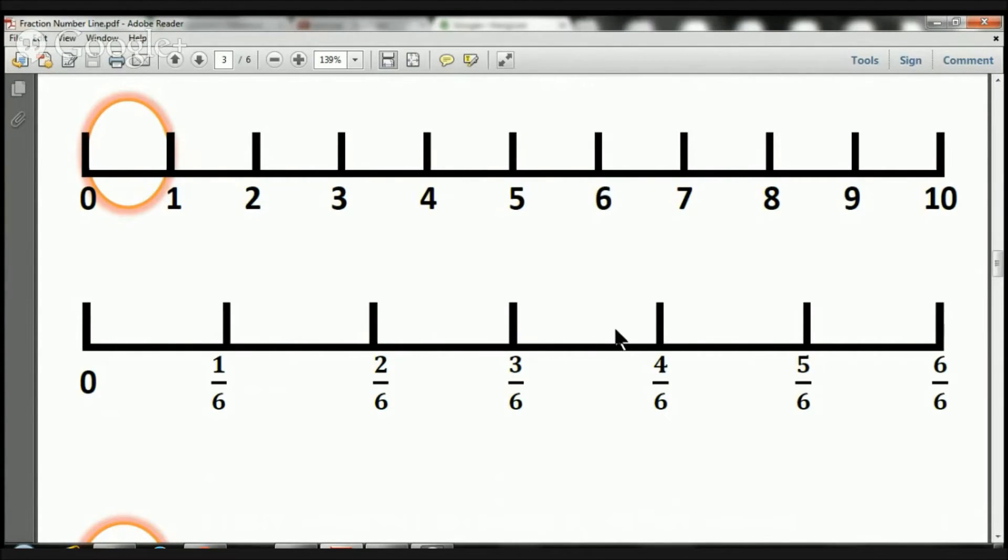From 0 all the way to here, that's going to be 5 6, because we have 1, 2, 3, 4, 5 pieces right there. Then from 0 all the way to here, that's going to be 6 6 or 1.